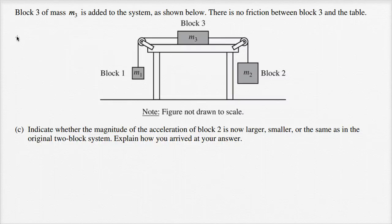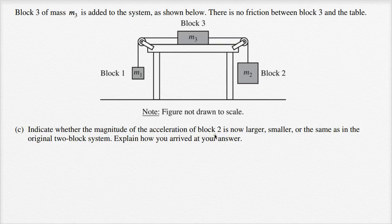Let's now tackle part C. They tell us block three of mass m sub three is added to the system as shown. There is no friction between block three and the table. Indicate whether the magnitude of the acceleration of block two is now larger, smaller, or the same as in the original two-block system. Explain how you arrived at your answer.